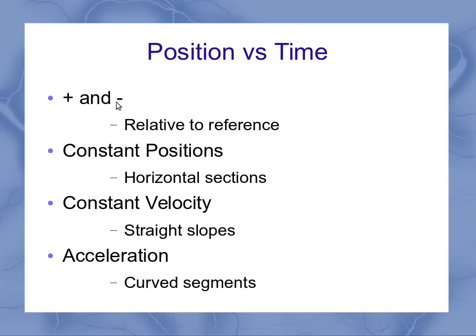So to summarize the position versus time graph: positive and negative positions tells you where you are relative to your reference point. Constant position, or standing still, is a horizontal section. Constant velocity in general is straight slopes, with upward slopes being positive velocities and downward slopes being negative velocities. If there's a curved segment, that means you've got acceleration, with curves facing upwards being positive and curves facing downwards being negative.